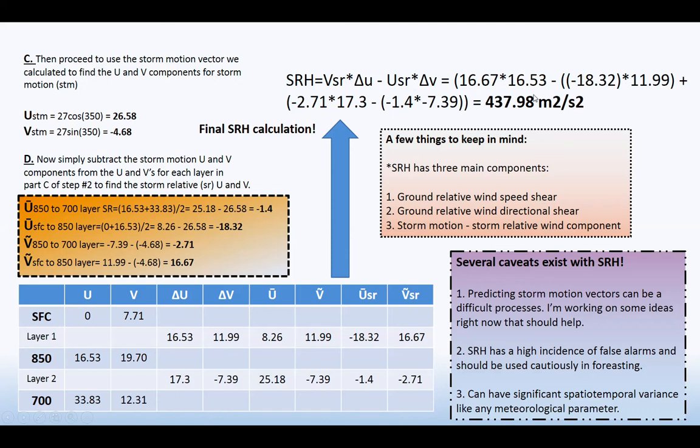So this is layer one. So now we're adding layer two, which is this. Okay. So just again, follow your formula right here, plug in layer two. And when you do all that, you get 437.898 meters squared per second squared.